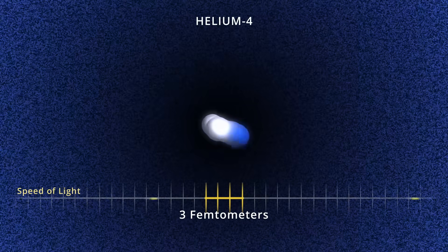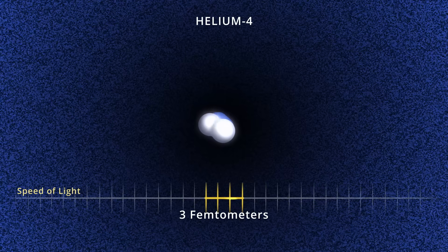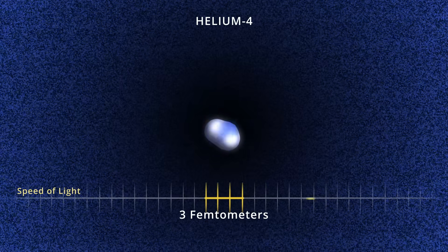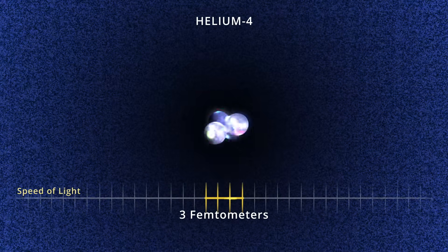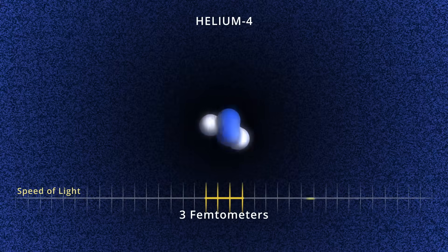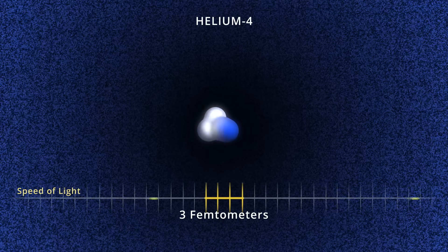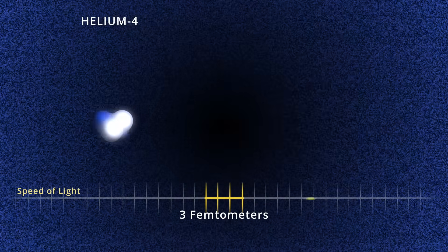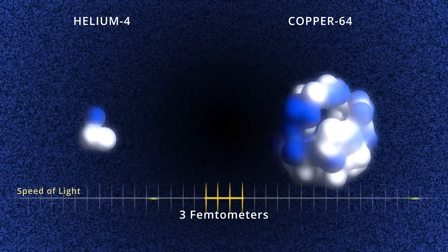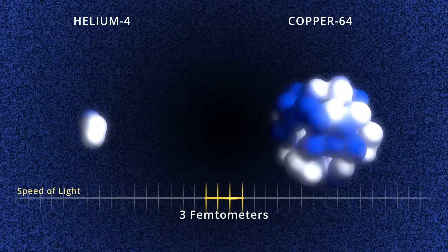Shown here is helium-4, the most abundant multi-nucleon system. When peering inside the protons and neutrons, the quarks and gluons move with the speed of light. It would take a proton about 3 baby seconds to traverse a helium-4 nucleus, and for larger nucleus like copper-64, about 10 baby seconds.